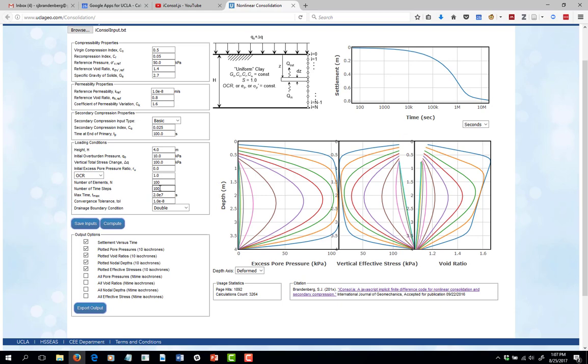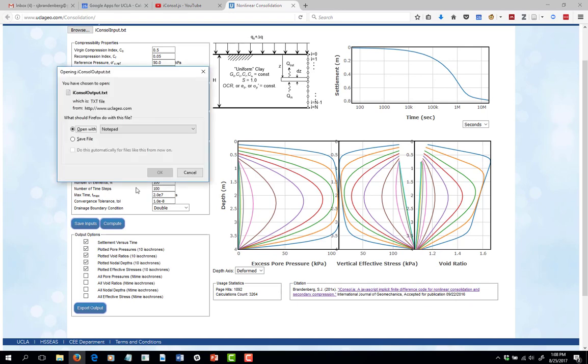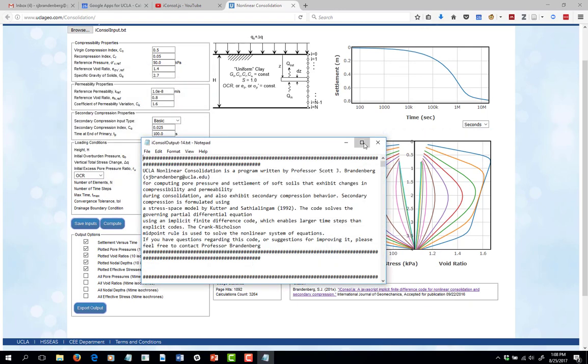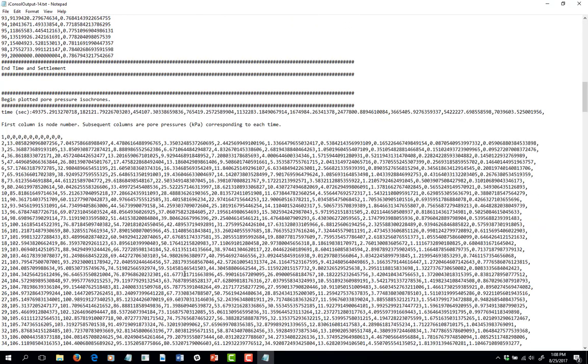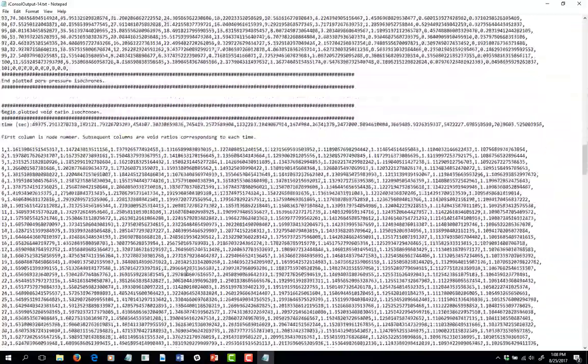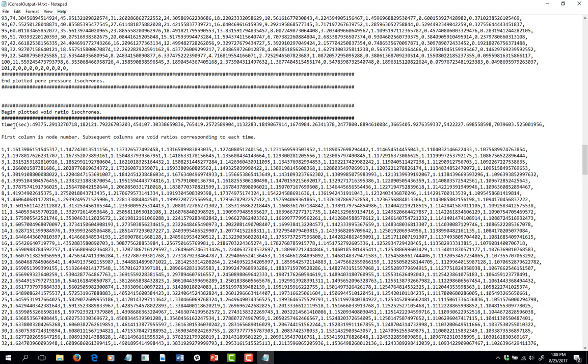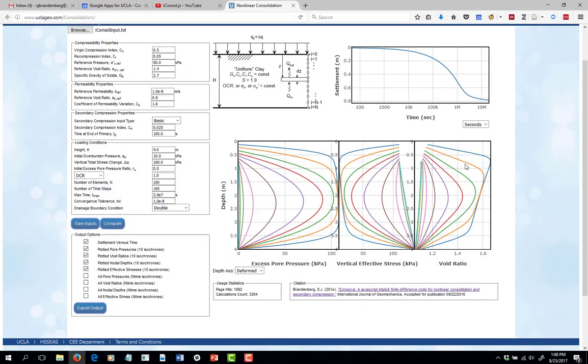So you could get all of the pore pressure values, all 100, or you could change that to 1,000 time steps and then get all 1,000 time steps and make a really continuous plot. So if you check those boxes, you'll get all of them, not just the 10 that are plotted, but all 100 or 1,000 or whatever you pick for the number of time steps. Then when you push export output, it'll give you an output file that's a text file. Here's settlement versus time. It's a comma separated value file. So you should be able to copy this and paste it into Excel if you want to use Excel to plot, or you can use MATLAB or whatever you want to plot the data. There's the pore pressure isochrones and so forth. The times corresponding to each isochrone are always provided as a row vector right at the top of the data file.